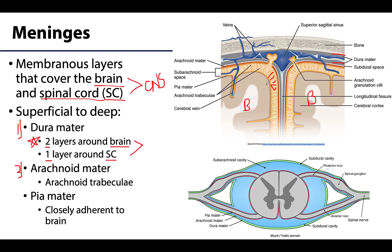Lastly, there is the pia mater, which is extremely closely and intimately related to the brain and the vasculature on the brain. It is transparent and gives the shiny appearance that you'll see associated with the central nervous system.